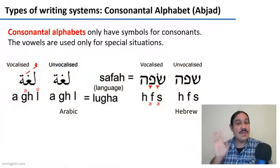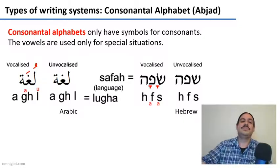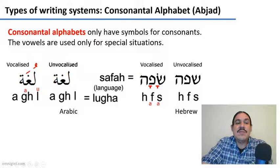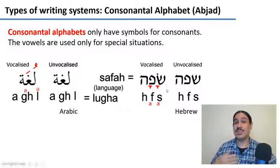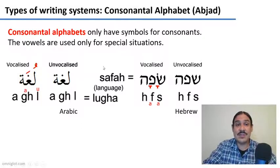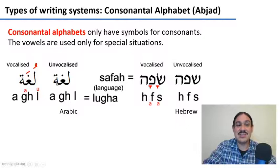Alphabets use consonants and vowels, but there are consonantal alphabets, or abjads, which mostly or only use consonants. Vowels do exist in Arabic and Hebrew and can be used for special situations like reading religious texts where you need to get the pronunciation right. But in everyday life — reading a newspaper or a college essay — you don't write the vowels. For example, the word for 'language' in Arabic is 'lugha': you write 'l', 'gh', and something indicating a short 'a' — just one vowel.